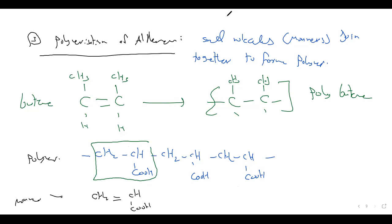For polymerization, polymers have three main problems: they end up in landfill, they are non-biodegradable, and they produce toxic gases when burned. However, they are useful because they are cheap, can be recycled, have low density, and can be used as insulators.